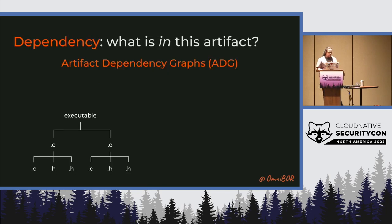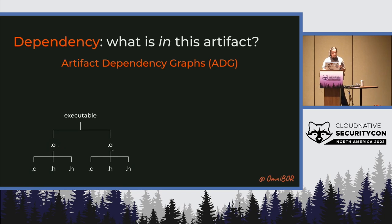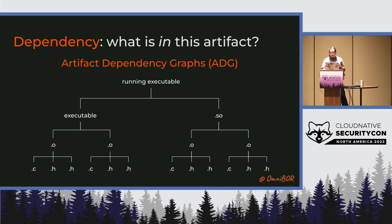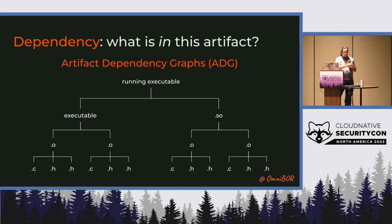Now that we have this dependency graph, we want to ask: what is in the artifact? We have the identity of a C file, maybe some headers — those go through a compiler, generate an object. We capture that information, and then the same with the other side, so we now have two object files that get linked together to create an executable. It's actually more complex than that because you also have shared objects that may already be present on the system. When you run an application, it's not just the executable image — it's also all the additional dependencies pulled in through your operating system, which also have their own set of things. Each of these could be represented by an Omnibore.